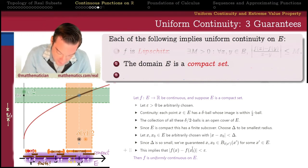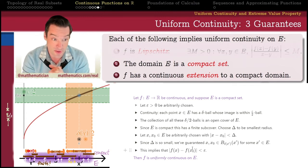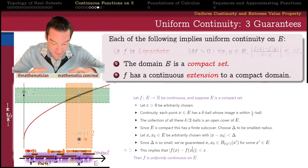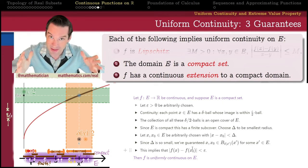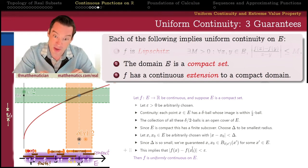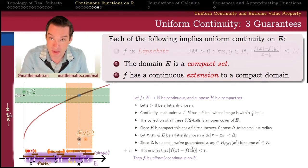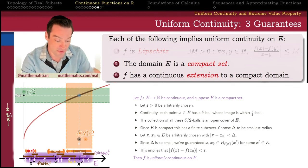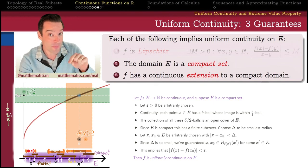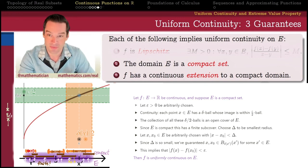The final guarantee of uniform continuity is: if I have a function which can be continuously extended to a compact domain, then that function will be uniformly continuous. If we can take my function and extend it in a continuous fashion to a larger domain which is compact, then that function must have been uniformly continuous on the original domain, because every continuous function on a compact domain is uniformly continuous. So let me show how we can use this third guarantee to prove that a function is uniformly continuous on a domain which itself might not be compact, but which might be able to be enlarged in a continuous fashion to a compact domain.